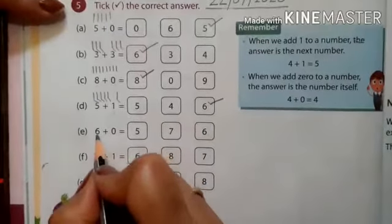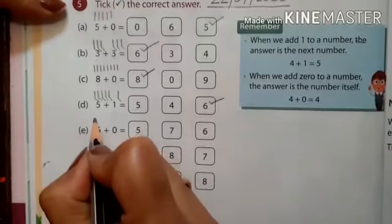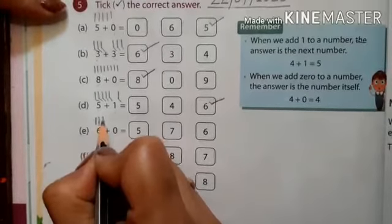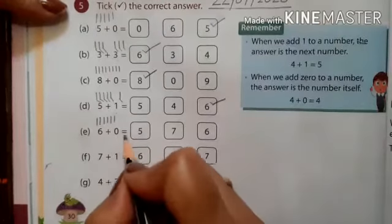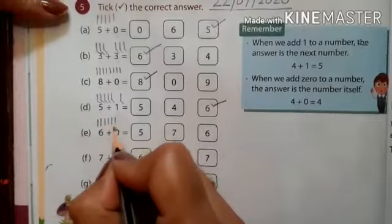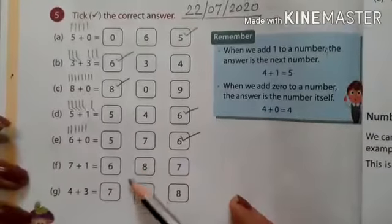Next sum: 6 plus 0. First number is 6—draw 6 lines: 1, 2, 3, 4, 5, and 6. Again 0, which means don't draw any line. Total lines are 6, so the answer is 6. The rest are for you to practice. Page number 37, exercise 12.